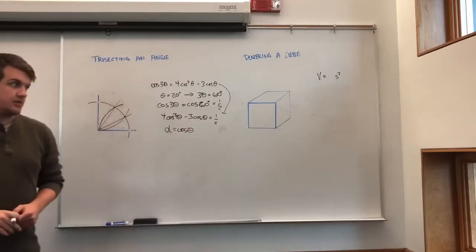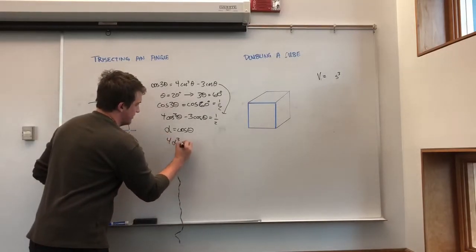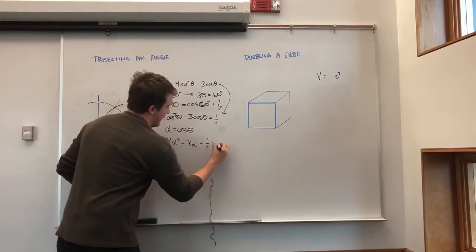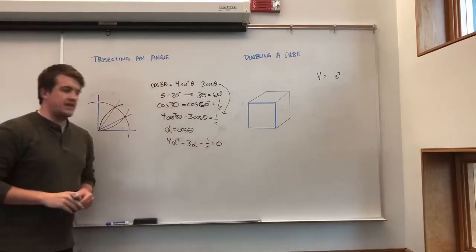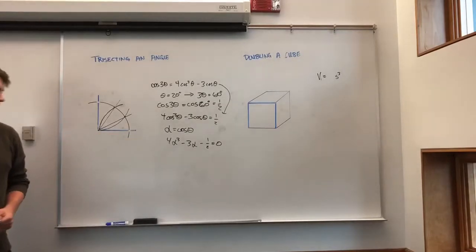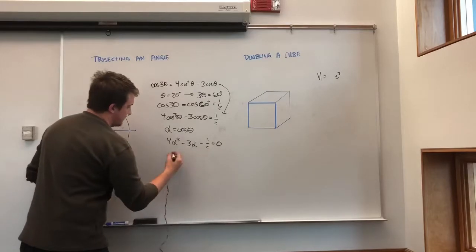Let's define that as a variable. Here, we look at 4 alpha cubed minus 3 alpha minus 1 half, and that is a polynomial that we can form using this variable that we've defined. Now, looking at this, if we times it by 2,